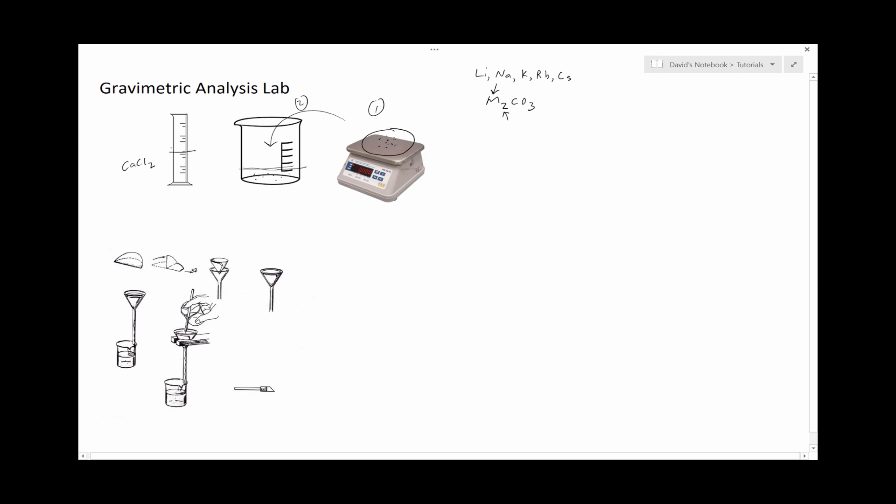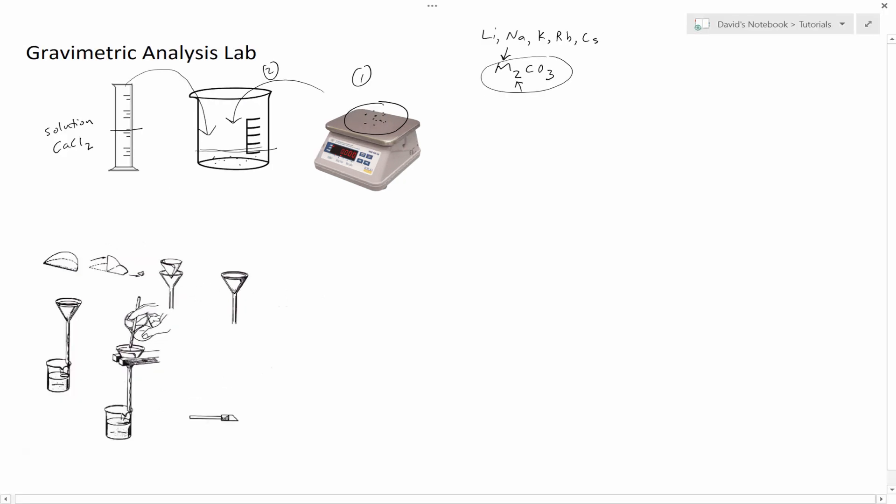We're going to get some calcium chloride in solution. I can't recall the actual concentration of the calcium chloride, but we're going to get a solution. I think we get 25 or 50 milliliters. Next, we're going to add this to the solubilized group 1 carbonate.